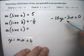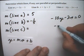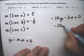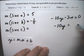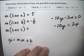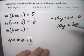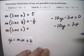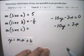So I'm trying to get this into y equals. I'm going to add 2x to both sides. And lastly, I'm going to divide both sides by negative 10.